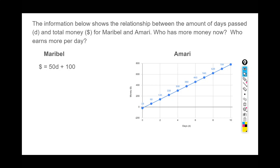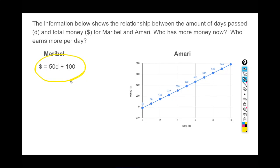So we have two people here, Maribel and Amari, and there's some relationship between the amount of days to pass and how much money they have. We can see that Maribel's information was given as an equation and we were given Amari's information as a graph. We should be able to compare these two.